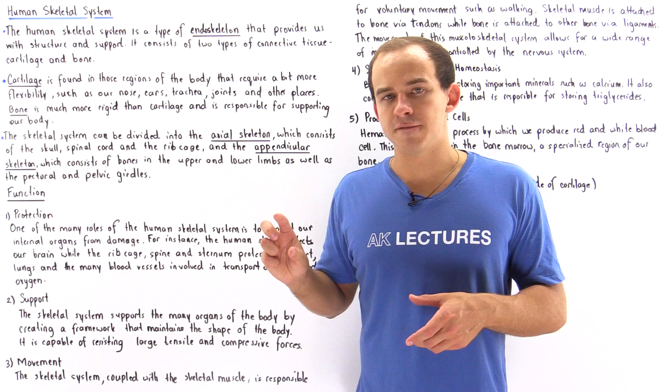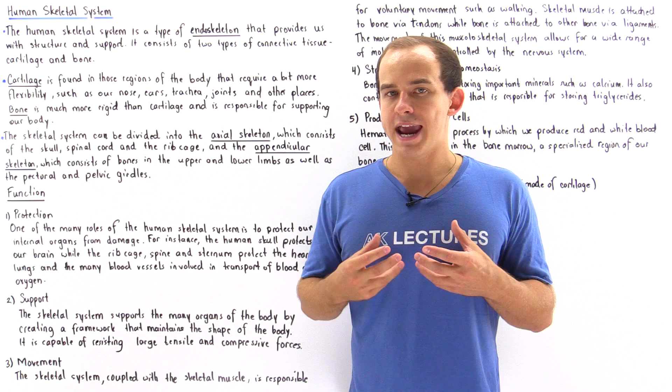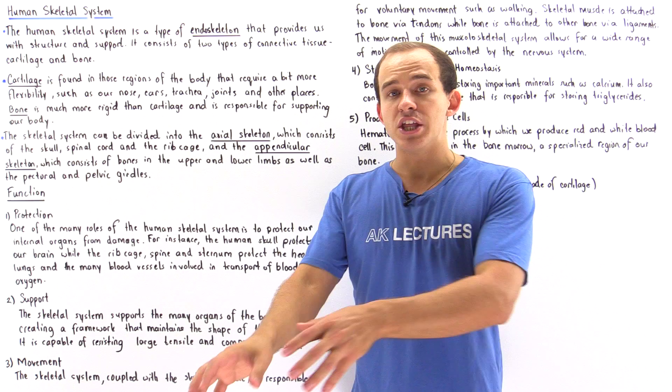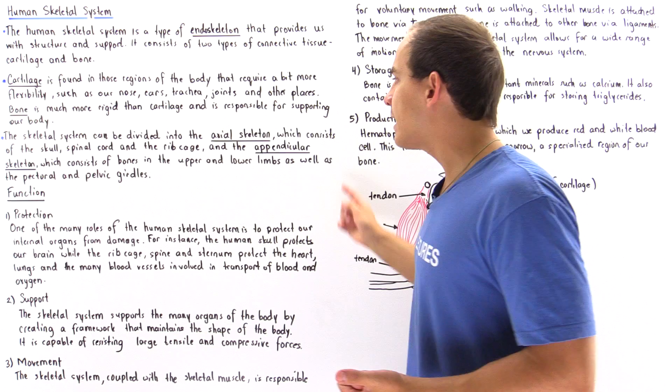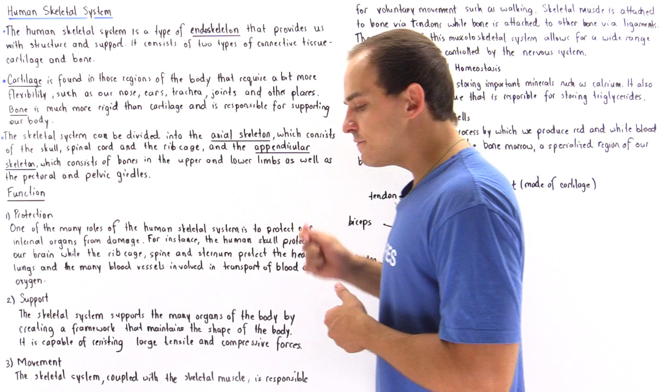We have the axial division, the axial skeleton, which consists of the skull, the spinal cord, and the rib cage. And we also have the appendicular skeleton that consists of the bones in the upper limbs, the arms, in the lower limbs, our legs, as well as our pelvic girdle and the pectoral girdle. These basically connect the axial skeleton to the appendicular skeleton.